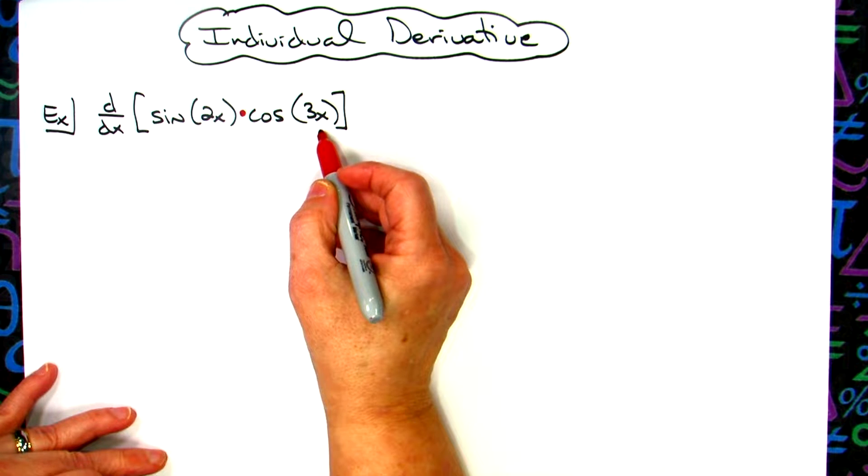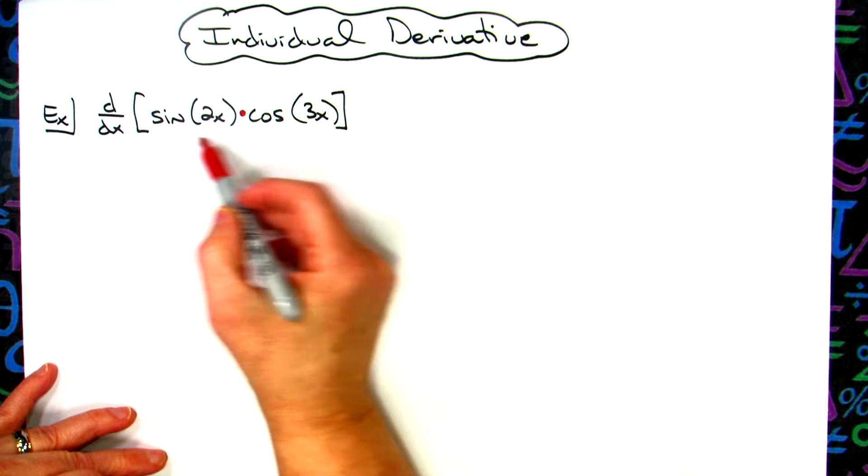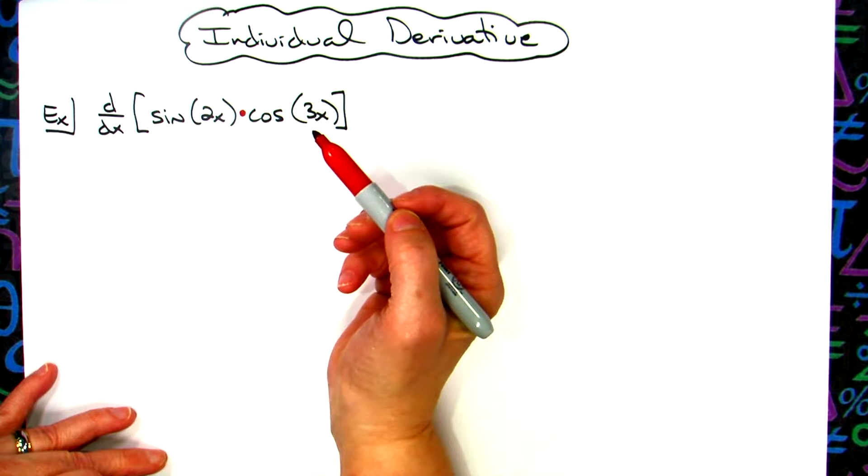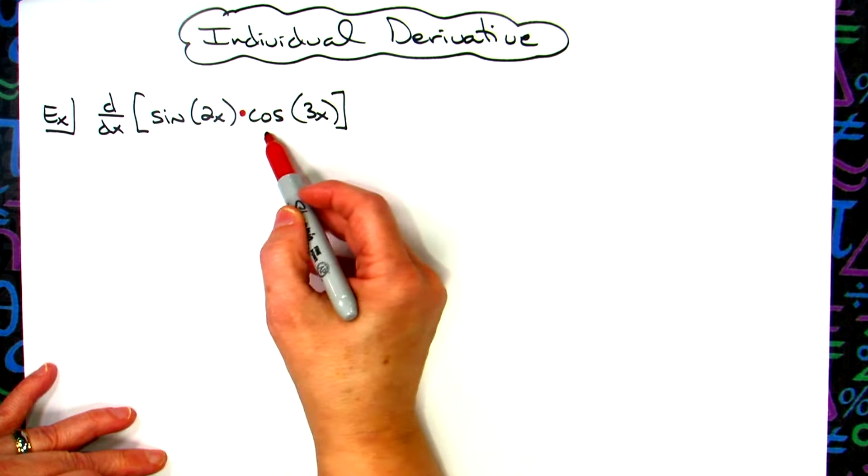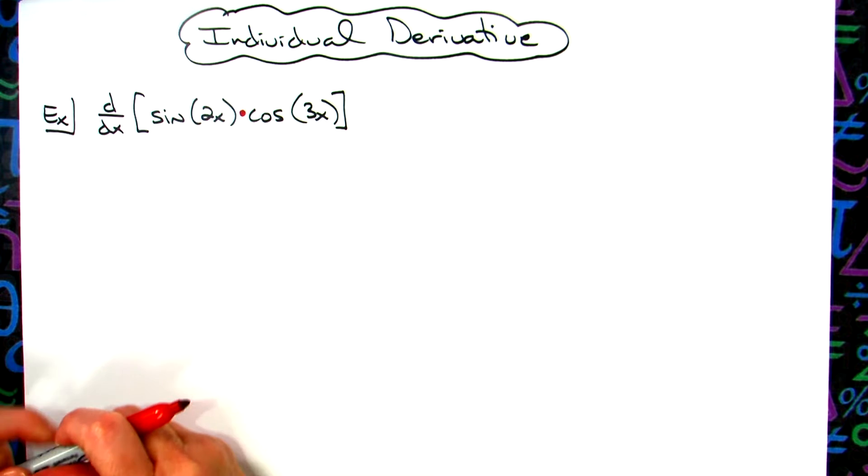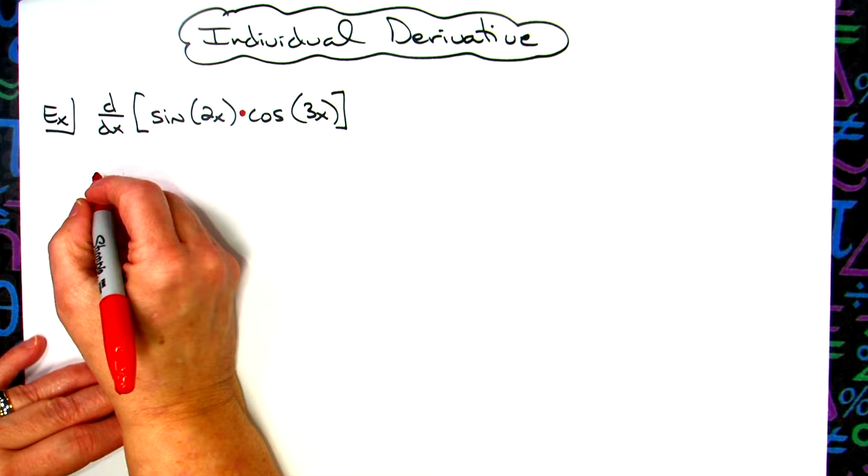And because these trig functions, we've got a sine as the outside function, we have a 2x as the inside function. Same thing over here - that 3x is on the inside, outside function's cosine - so we will be needing chain rule.